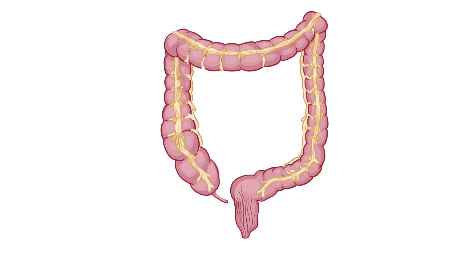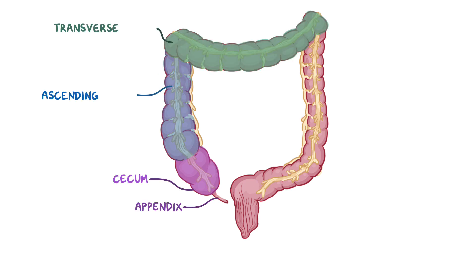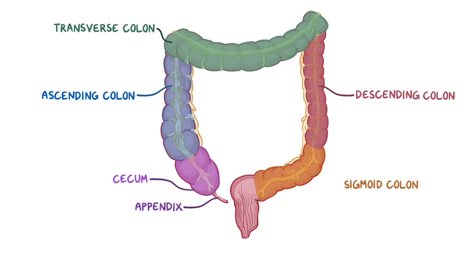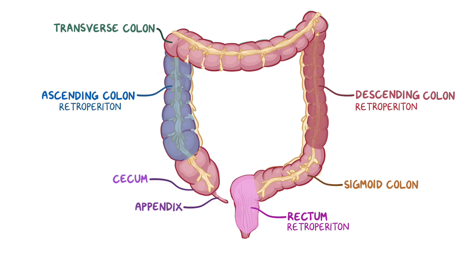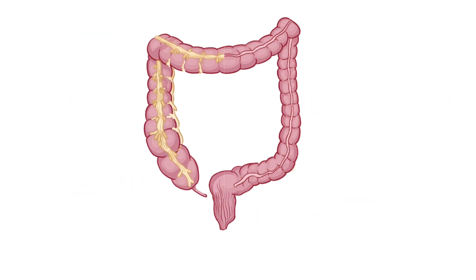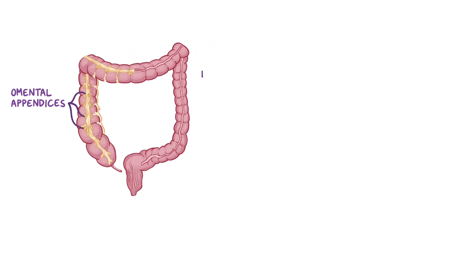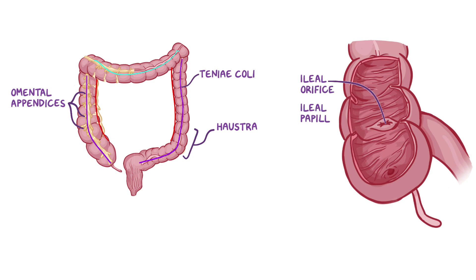The large intestine consists of the cecum, appendix, ascending, transverse, descending, and sigmoid colon, and the rectum and anal canal. The ascending and descending colon and the rectum are retroperitoneal, while the cecum, transverse, and sigmoid colon are intraperitoneal. On the outside, the large intestine has omental appendices, teniae coli, and haustra that differentiate it from the small intestine, as well as semilunar folds on the inside. The cecum has an ileal orifice and ileal papilla at the ileocolic junction and an opening for the base of the appendix.